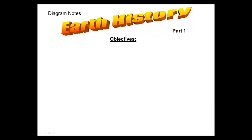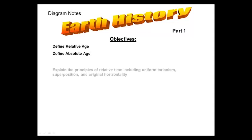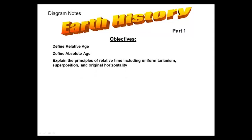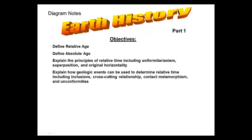Our objectives for part one are as follows. We will look at relative age and define what relative age means. Define absolute age and see how that's different than relative age. Explain the principles of relative time, including things such as uniformitarianism, superposition, and original horizontality.